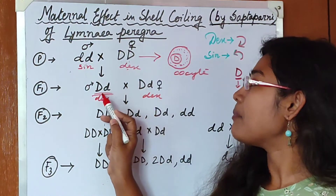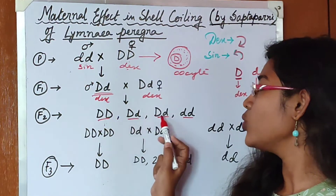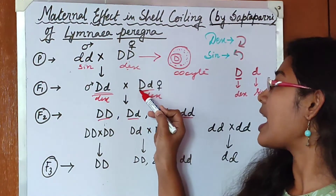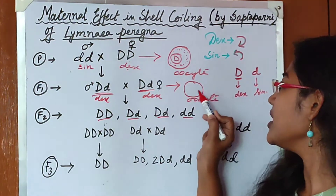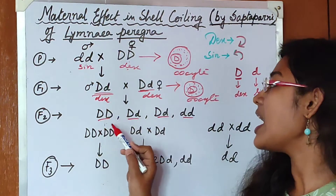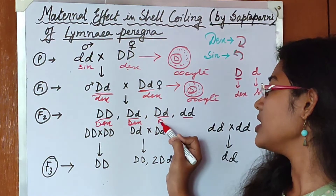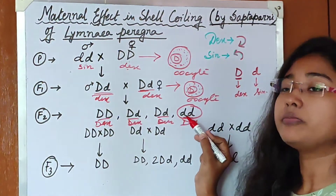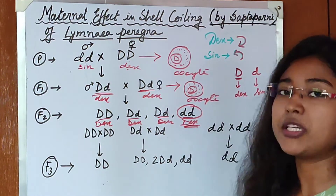When we do selfing of the F1 individuals, four types of progeny will be formed: capital D capital D, two capital D small d, and one small d small d. But as the mother has capital D in its nucleus, whatever oocyte it forms will contain capital D and will produce the protein. As a result, this protein will convert every progeny into dextral — including the small d small d individual, which though has a sinistral genotype, will be dextral because of its mother.